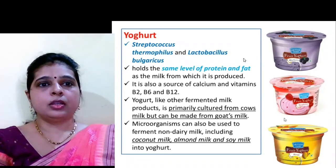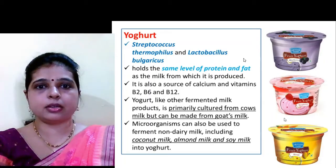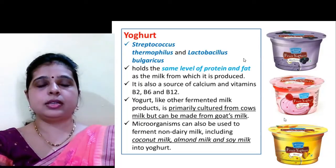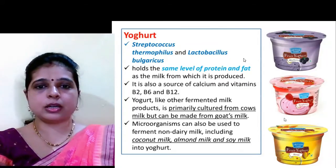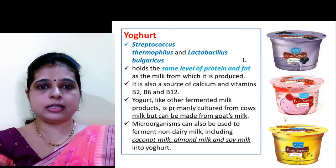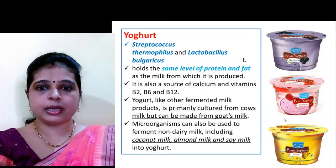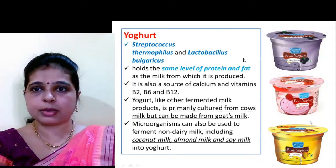For yogurt making, Streptococcus thermophilus and Lactobacillus bulgaricus play a key role. Yogurt has the same level of protein and fat as the milk from which it is produced, and is a good source of calcium and vitamins B2, B6, and B12. It was earlier made from cow milk only, but now goat milk is also used. Non-dairy milks like coconut milk, almond milk, and soy milk are also being used nowadays for yogurt making.